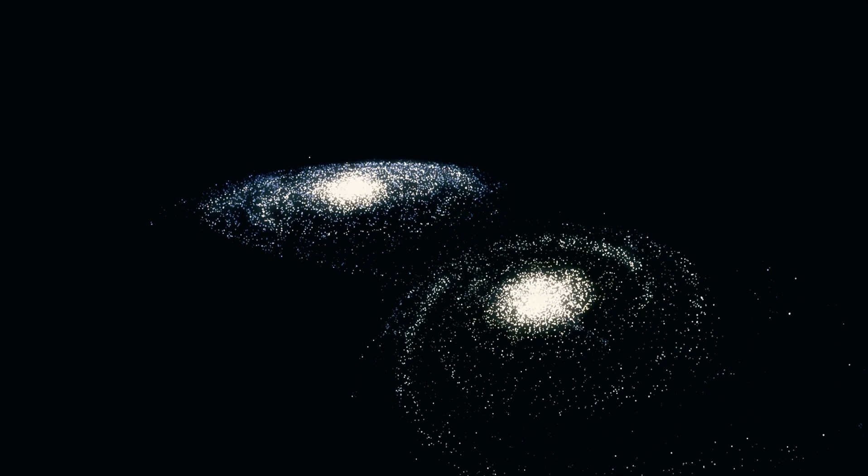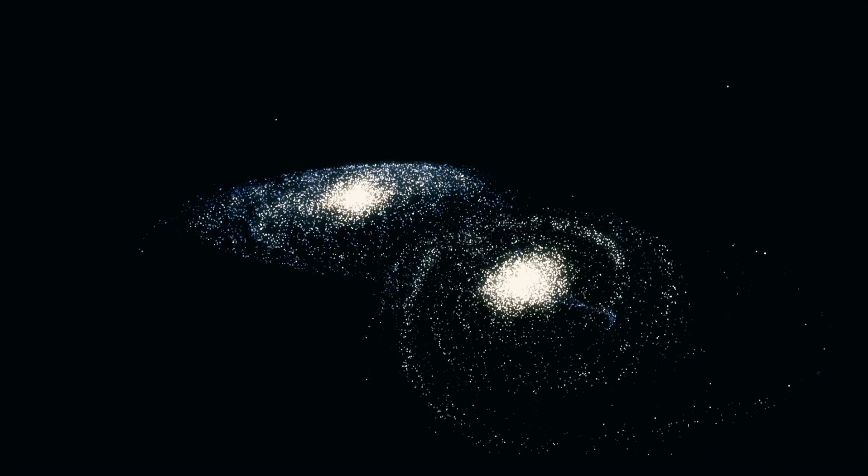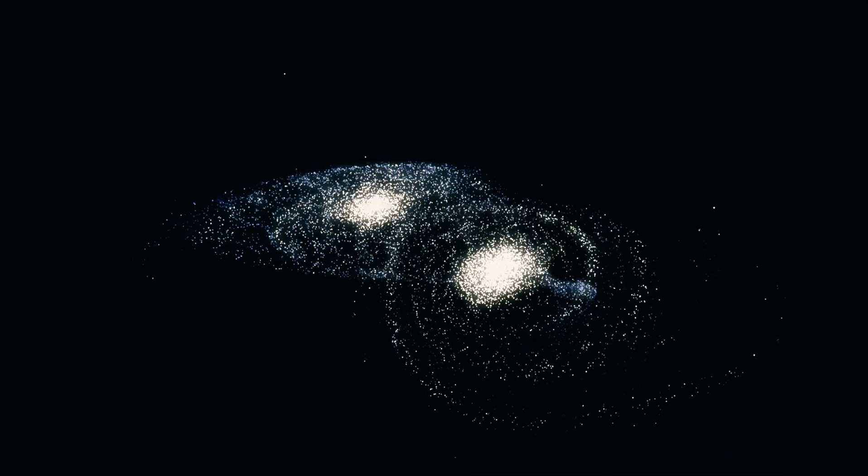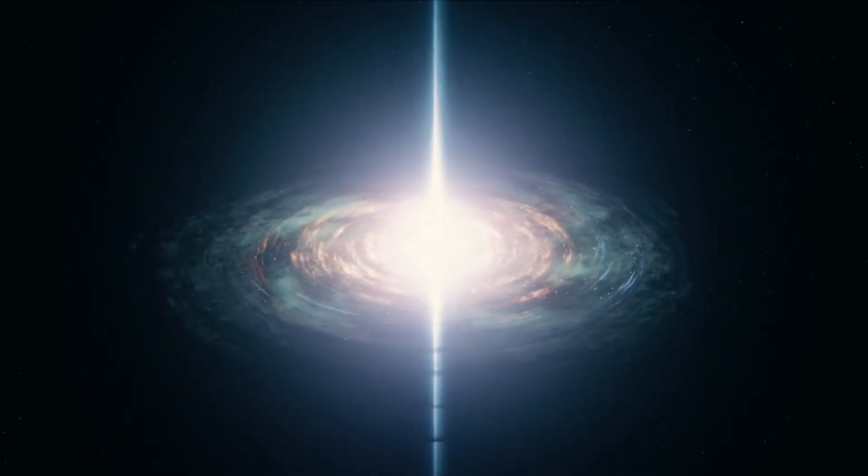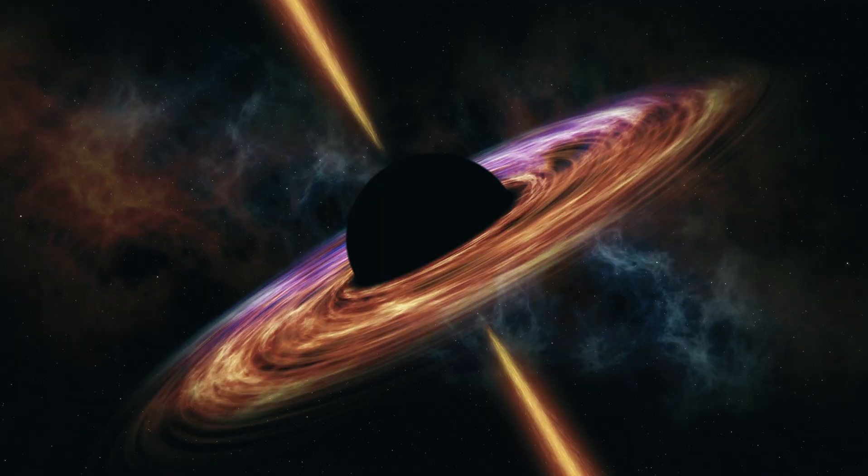Both Andromeda and the Milky Way have a center supermassive black hole. Over a period of millions of years, these black holes will eventually spiral into one another and merge close to the core of the newly created galaxy.